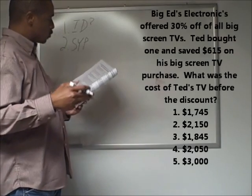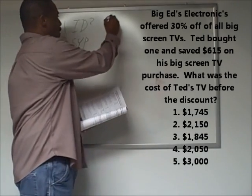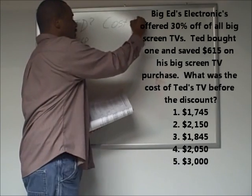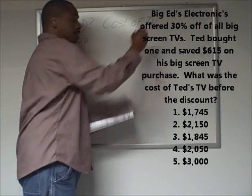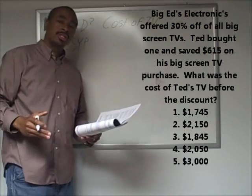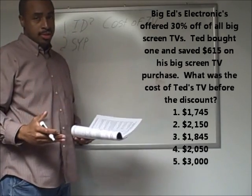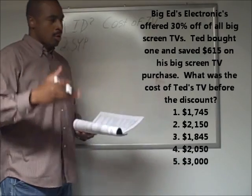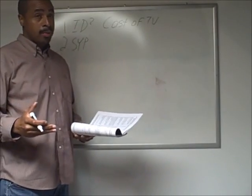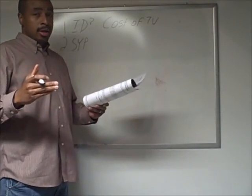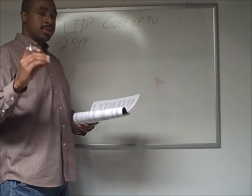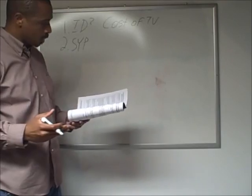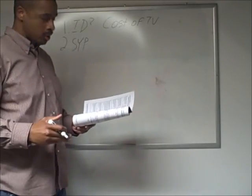The question was: what was the cost before the discount? So what we're looking for is the original cost of the TV. This is a very important step because a lot of times students get trapped in the middle of a problem and lose connection with what the question is actually asking, and oftentimes they end up answering a different question.